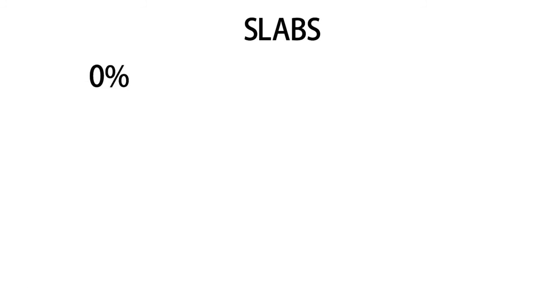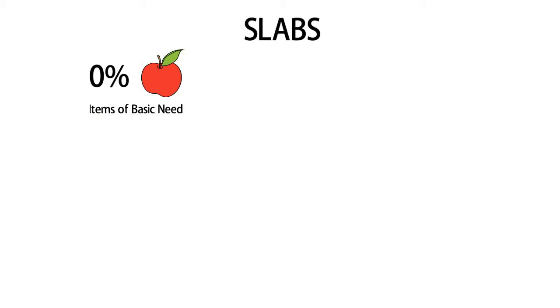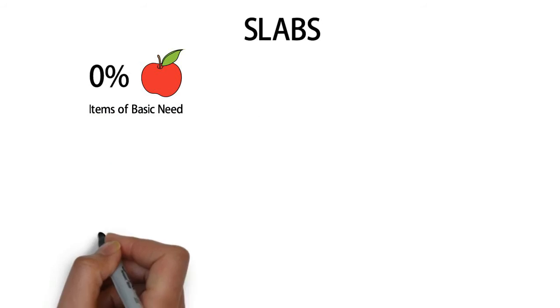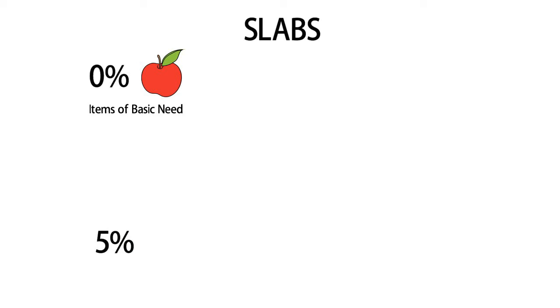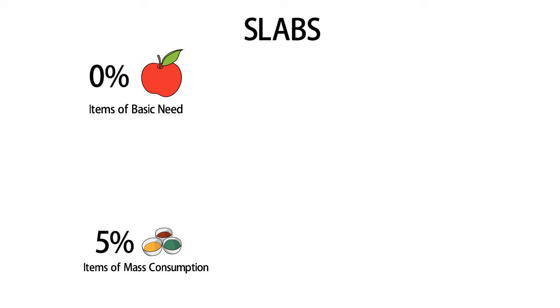GST has been divided into various slabs and products fall under these slabs accordingly. The first slab is the 0% slab, where 0% tax is collected for basic items like food grains, eggs, vegetables, etc. The next slab is the 5% slab, where all products needed for mass consumption fall, such as spices and cotton.